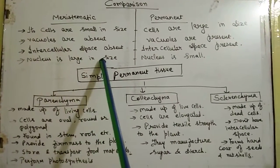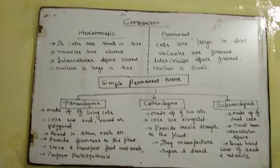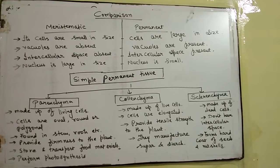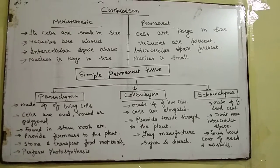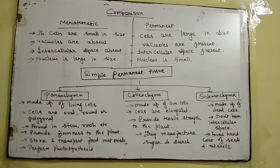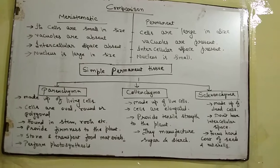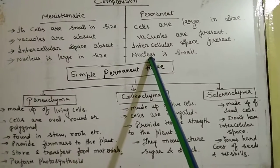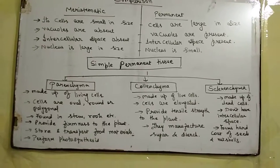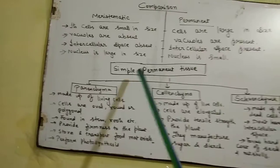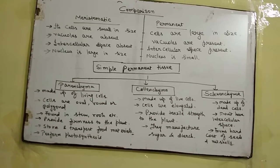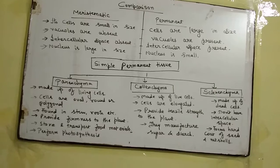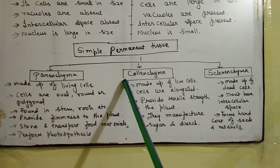Another point: the nucleus is large in size in meristematic tissue, and its main function is to divide and multiply. Now, moving to the classification of simple permanent tissue. Simple permanent tissue is classified into three types: parenchyma, colenchyma, and sclerenchyma.